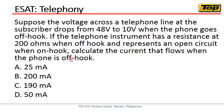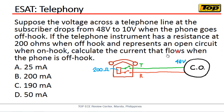In simple terms, 48 volts is being supplied, and when you pick up the telephone it becomes 10 volts. Given that the telephone has a resistance of 200 ohms, what will be the current that will flow through the phone when it is off-hook?